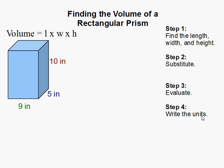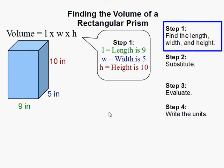How to find the volume of a rectangular prism. What you first need to do is find the length, the width, and the height. So that would be length, width, and height.